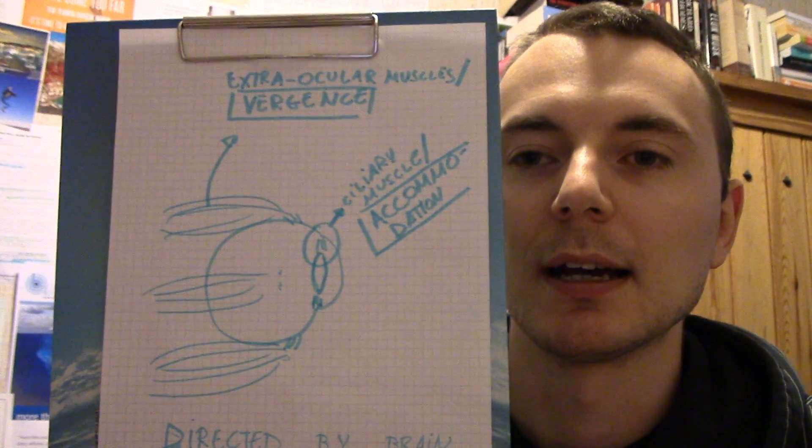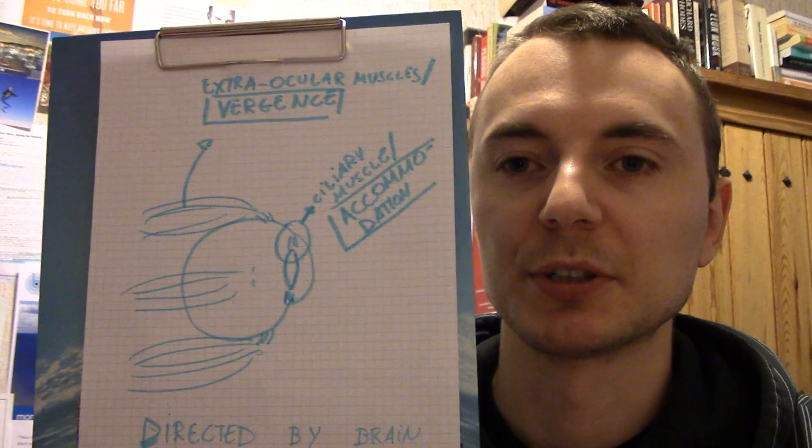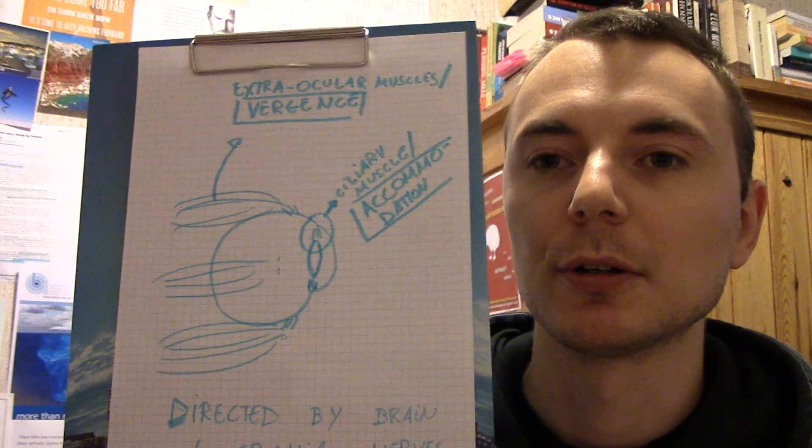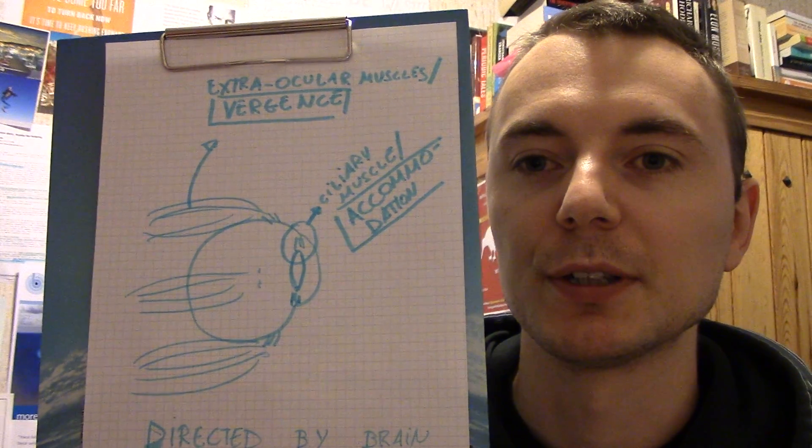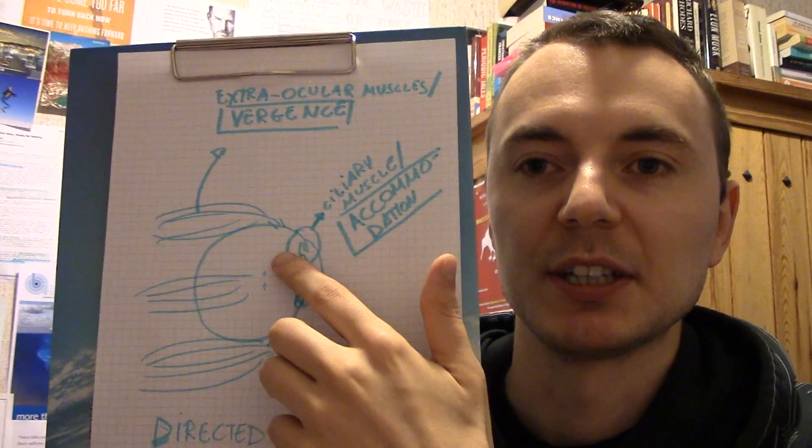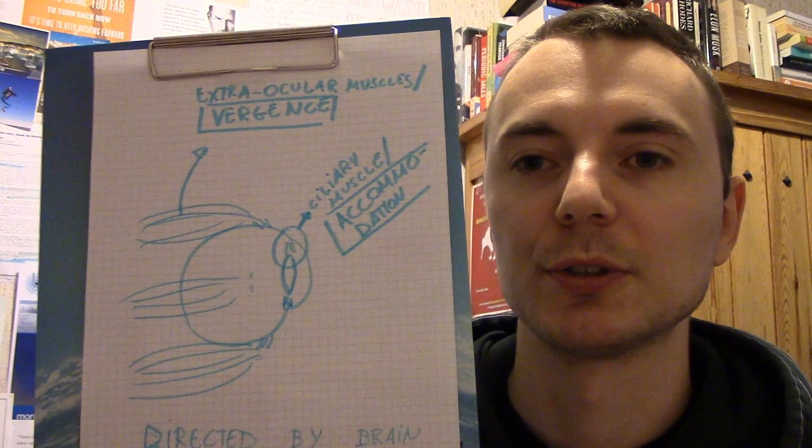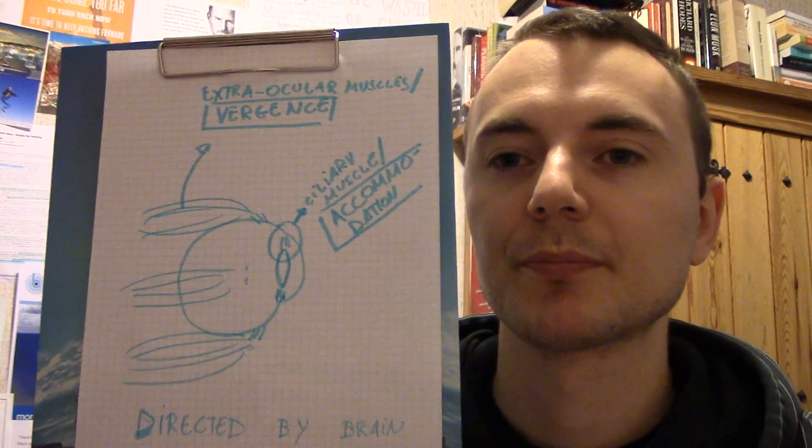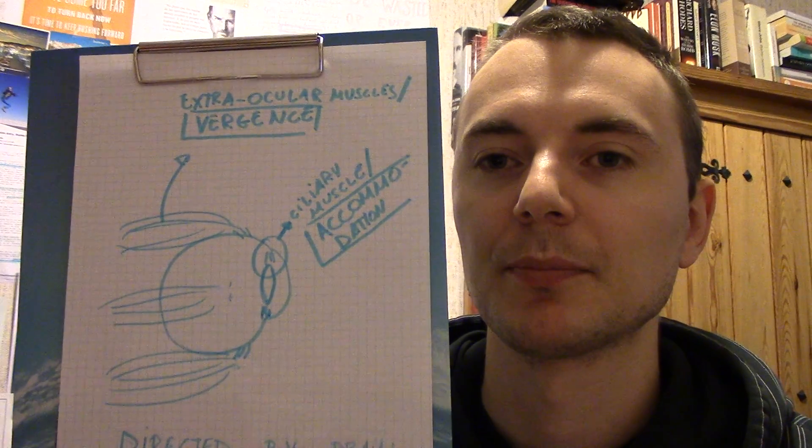So this was my short video about vergence and accommodation and I will use this for future reference when I talk about vergence and accommodation. And my next video, maybe tomorrow, maybe next week, I don't know, will be about these rapid alternating goggles, like occlusion goggles or flickering goggles, and how they are used in vision therapy as kind of an anti-suppression tool.